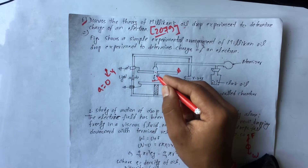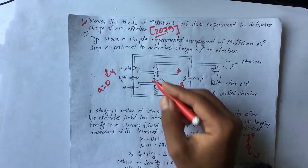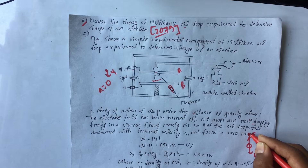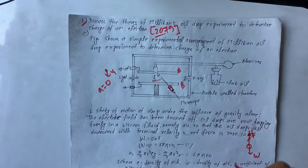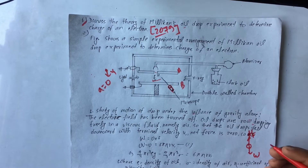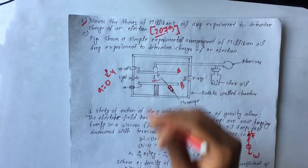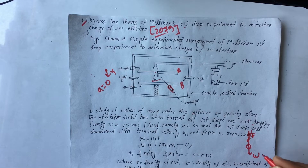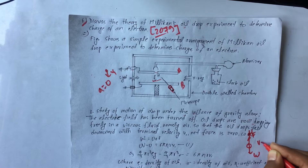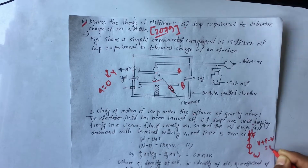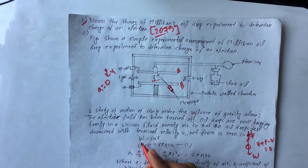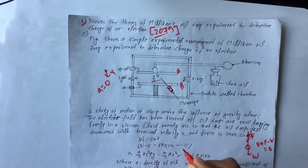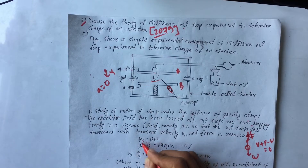The viscous force acts on the drop as it moves through the viscous fluid. There is also an upthrust acting upward on the drop. Since the net force is zero at terminal velocity, weight W equals upthrust U plus viscous force F: W = U + F.